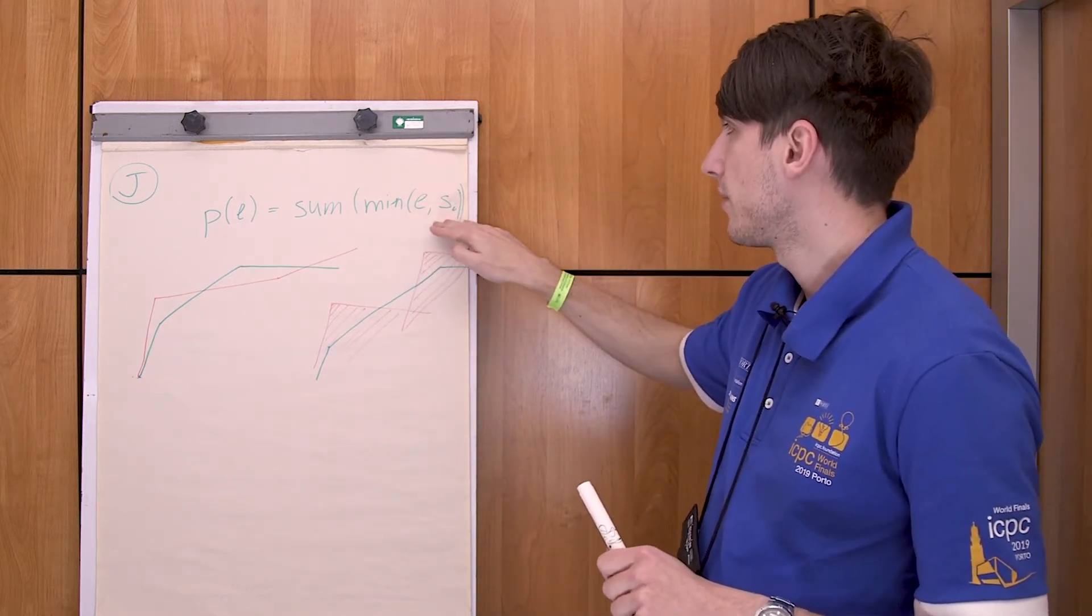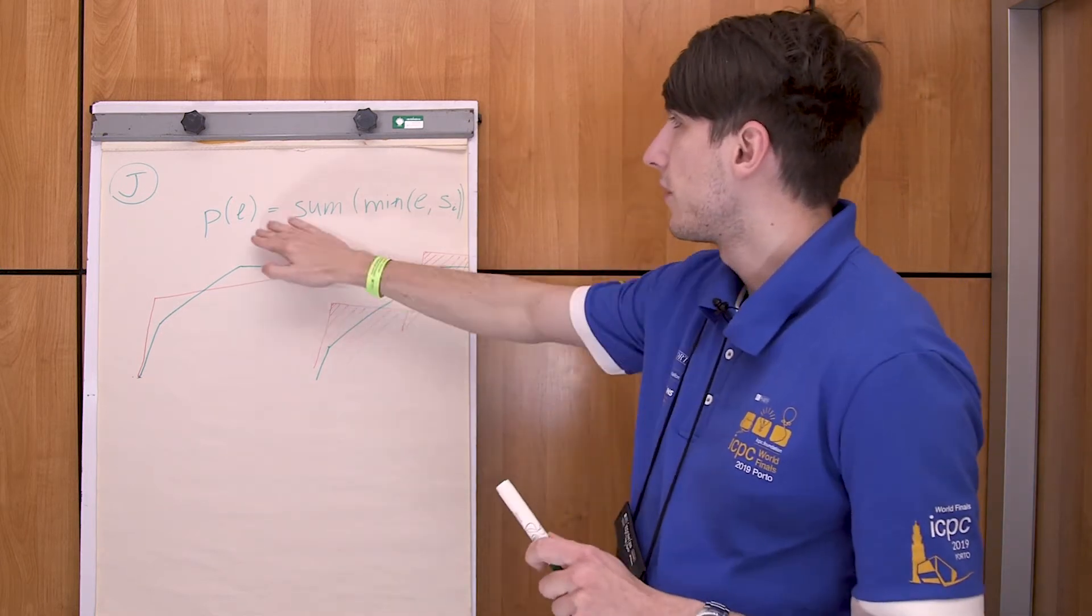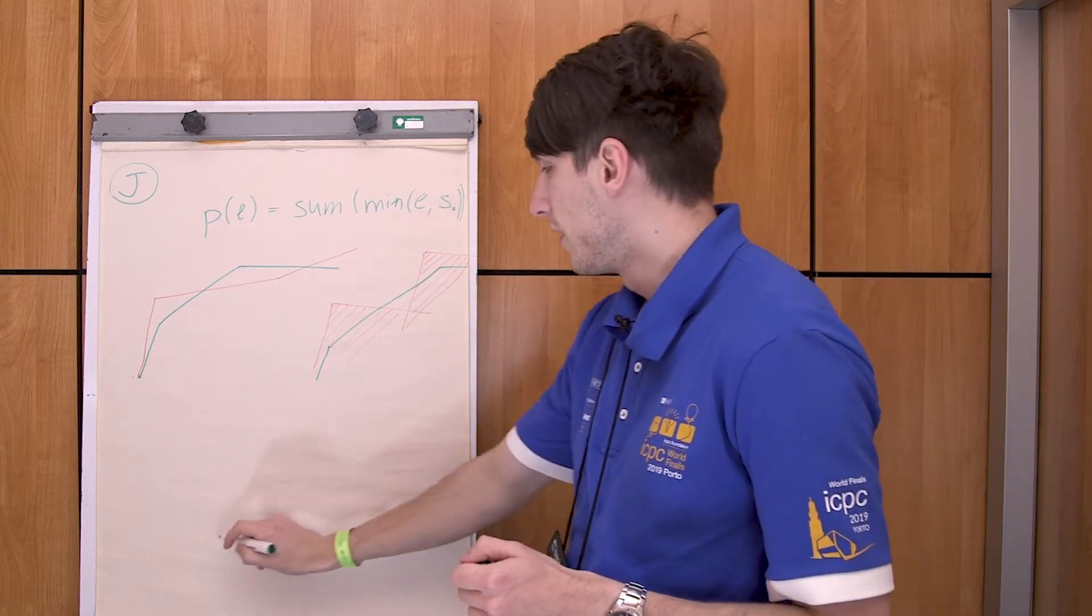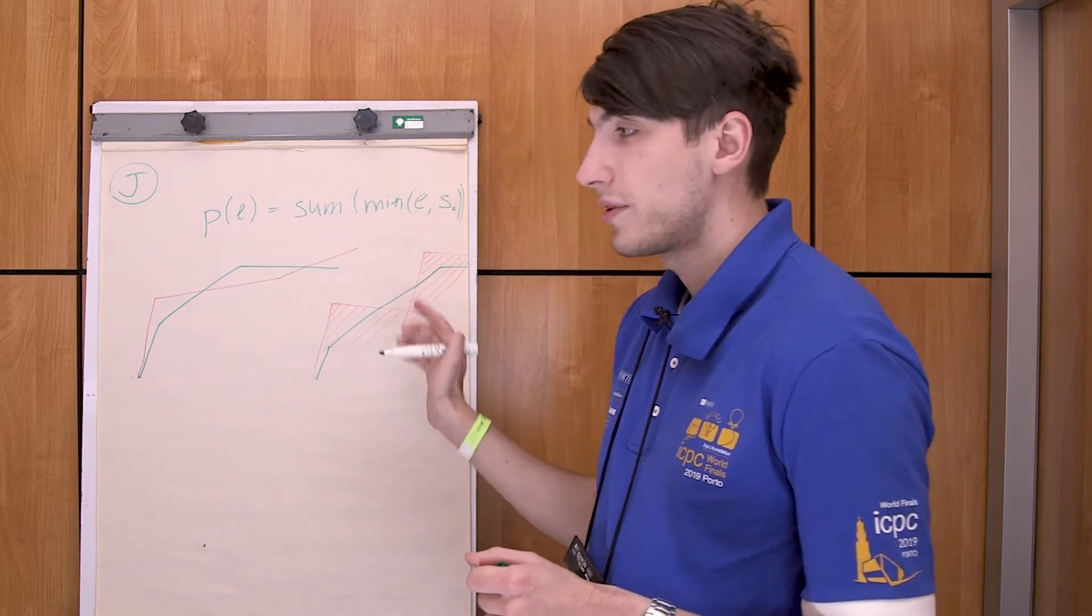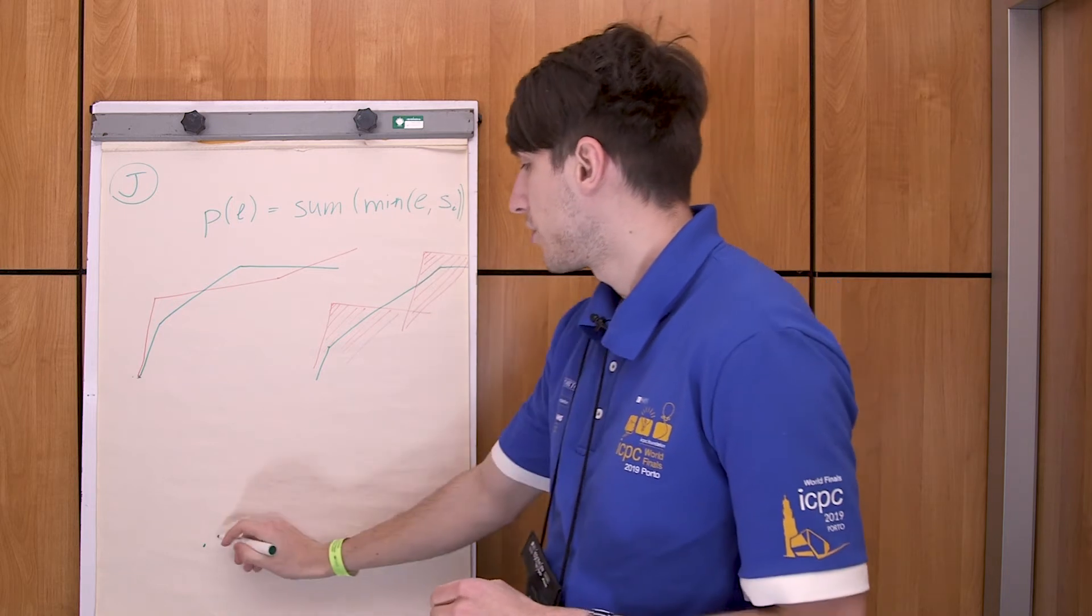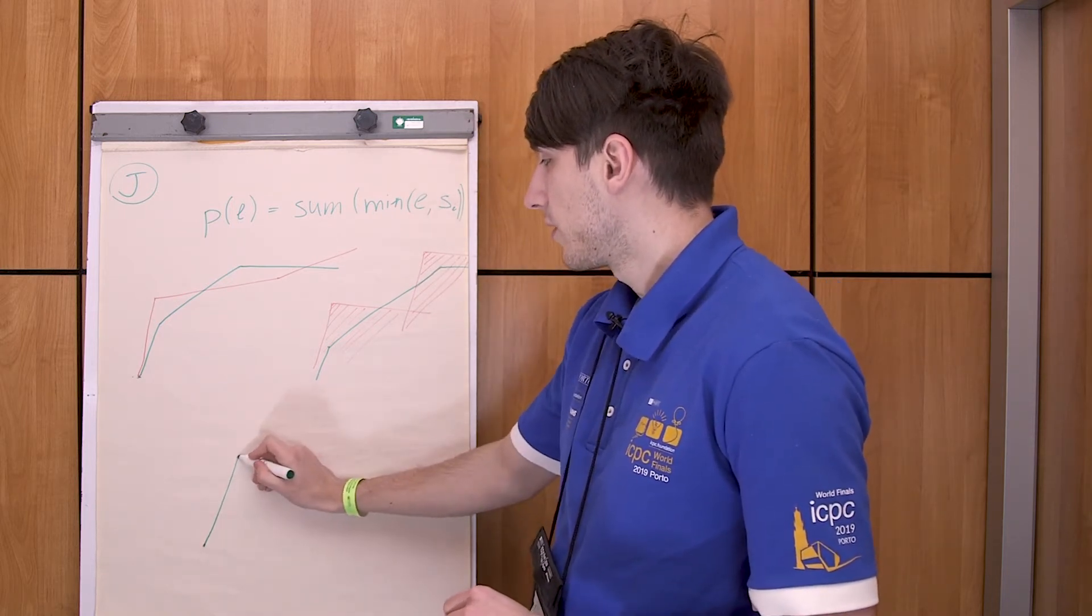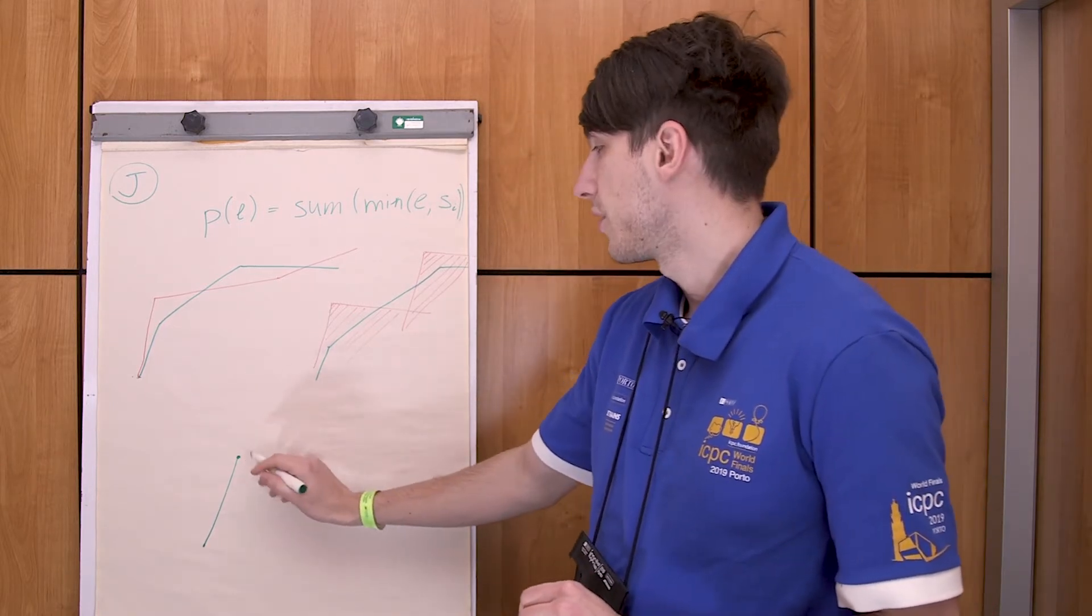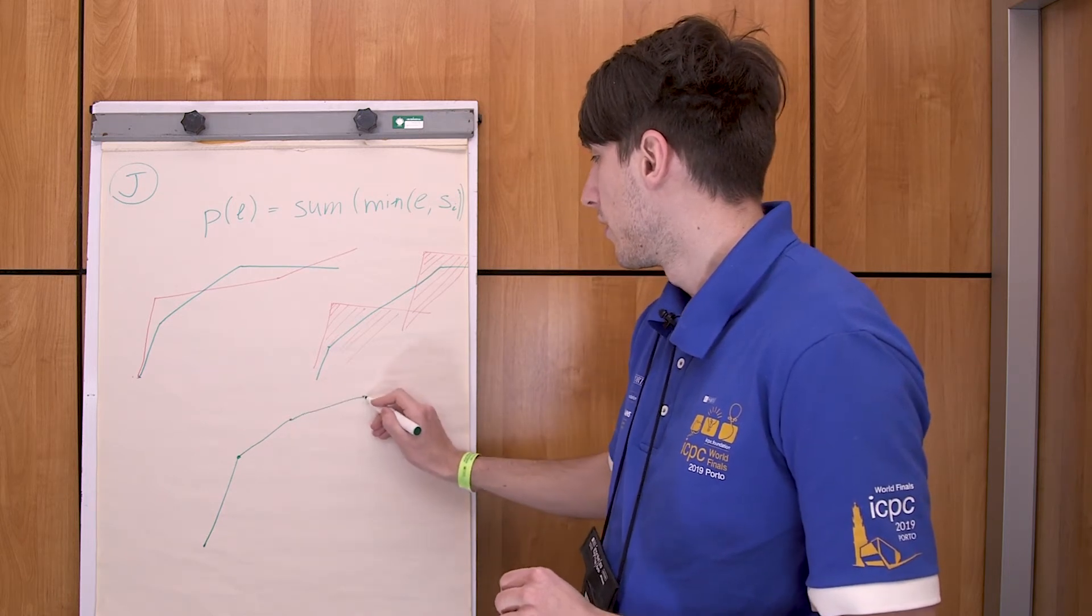Clearly, the function for the number of points for each player would be a partially linear function. At the beginning, when L is smaller than each of the points for each stage, the function grows with L. After that, when it reaches the first score for the first stage, it slows down and goes on.